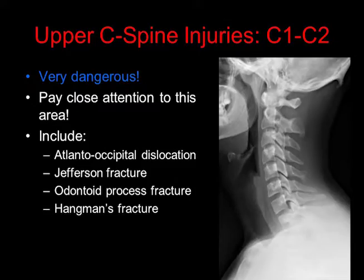The upper cervical spine is a very important region, and injuries here are considered very dangerous. It's very important to pay close attention to this area. Some of these fractures include atlanto-occipital dislocations, Jefferson fractures, odontoid process fractures, and Hangman's fractures.